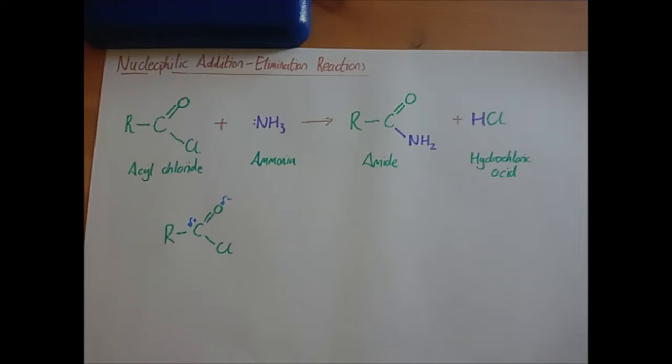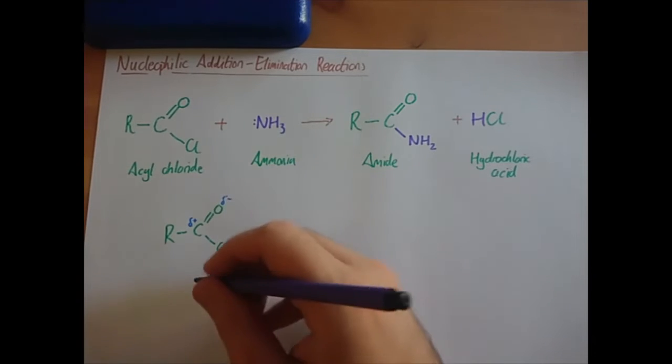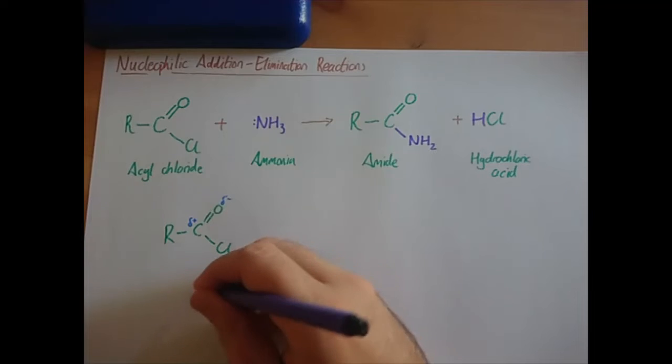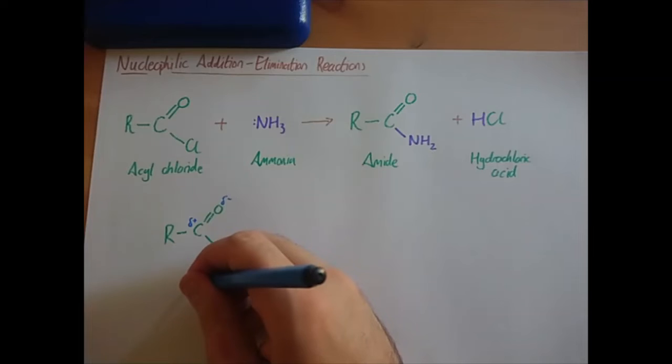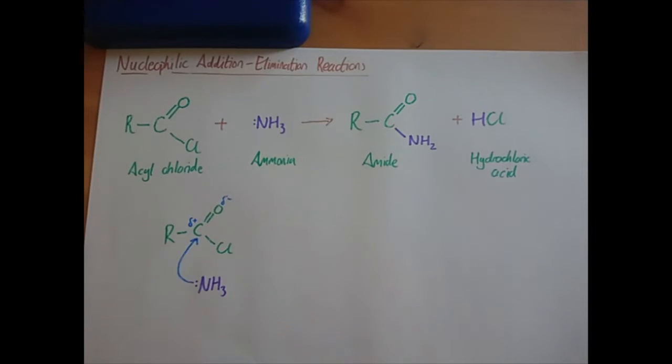That's what nucleophilic means - it's going to attack the positive carbon. What has a lone pair? Oh look, our ammonia. So ammonia has a lone pair, and that means our first step in this reaction will be the nucleophilic attack. We're going to have to attack this carbon. Draw the curly arrow going from the lone pair on the ammonia, on the nitrogen in the ammonia, to the delta positive carbon.